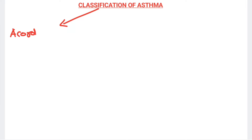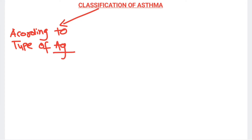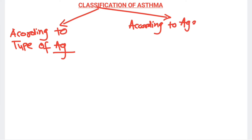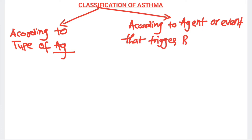Now, classification of asthma. Asthma is divided into two categories: one category is according to the type of antigen that leads to asthma and leads to hypersensitivity, and the second category is according to the agent, antigen, or event that triggers the bronchoconstriction.